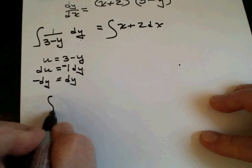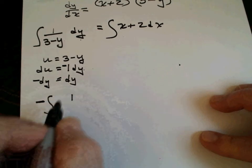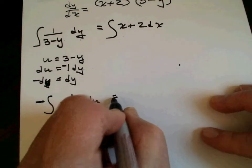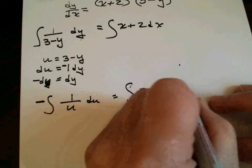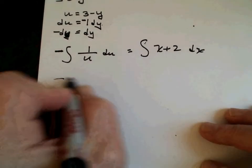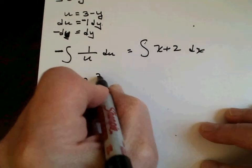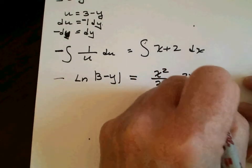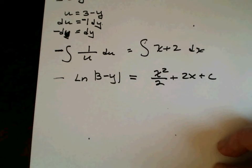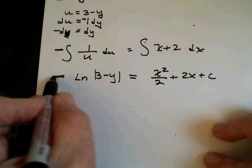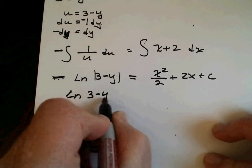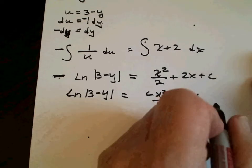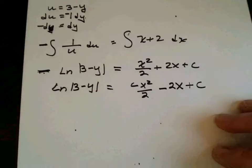If that's the case, the integral of negative (1/u) du equals the integral of (x+2) dx. So we get negative ln of u, where u is (3−y), which equals x squared over 2 plus 2x plus c. Getting rid of the negative sign: ln(3−y) equals negative x squared over 2 minus 2x plus c, since it's still a constant.